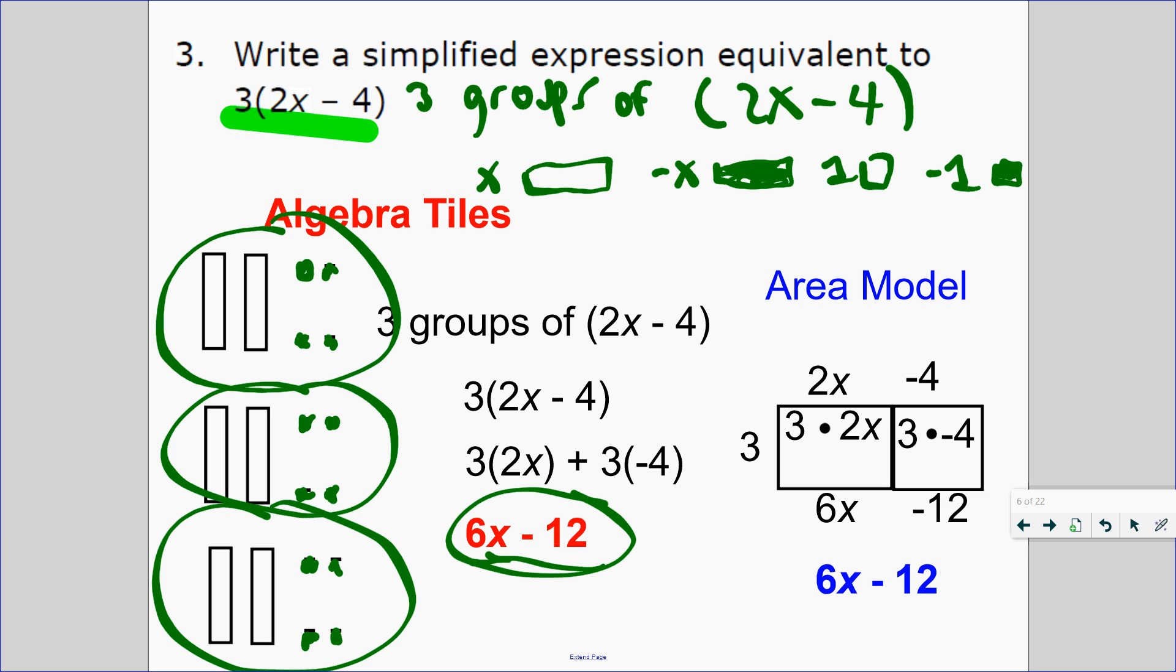Another way you can do it is this way. Some people prefer the area model. I personally like the area model. I think it's faster. You draw a rectangle, just think of multiplication what you did in fifth grade. For example, in fifth grade, do you remember doing problems like 42 times 5? You have to do something called area model. How do you break down 42? 40 plus 2 and 5. How do you find the area of this rectangle? 5 times 40 and 5 times 2 is 10, so it's 210.